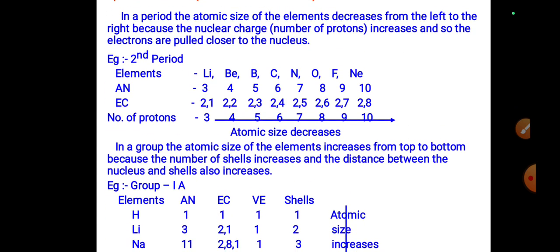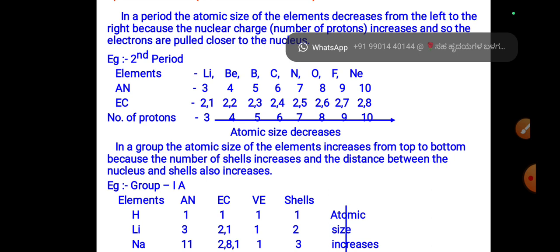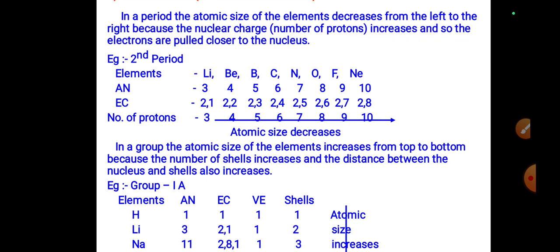For second period elements — lithium, beryllium, boron, carbon, nitrogen, oxygen, fluorine, neon — with atomic numbers 3 through 10, electronic configurations go from 2,1 to 2,8. As the nuclear charge increases across the period, the atomic radius decreases.